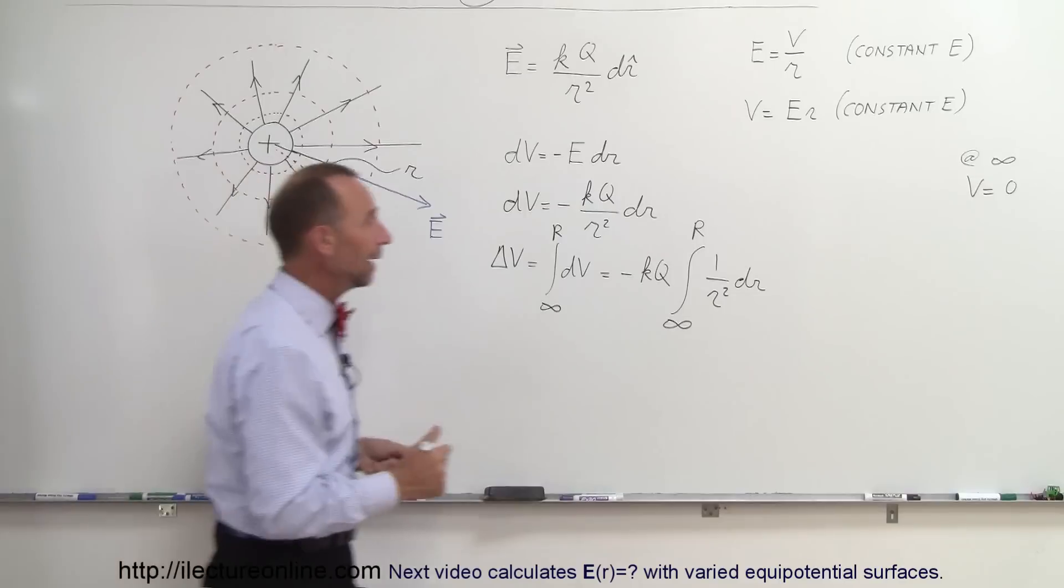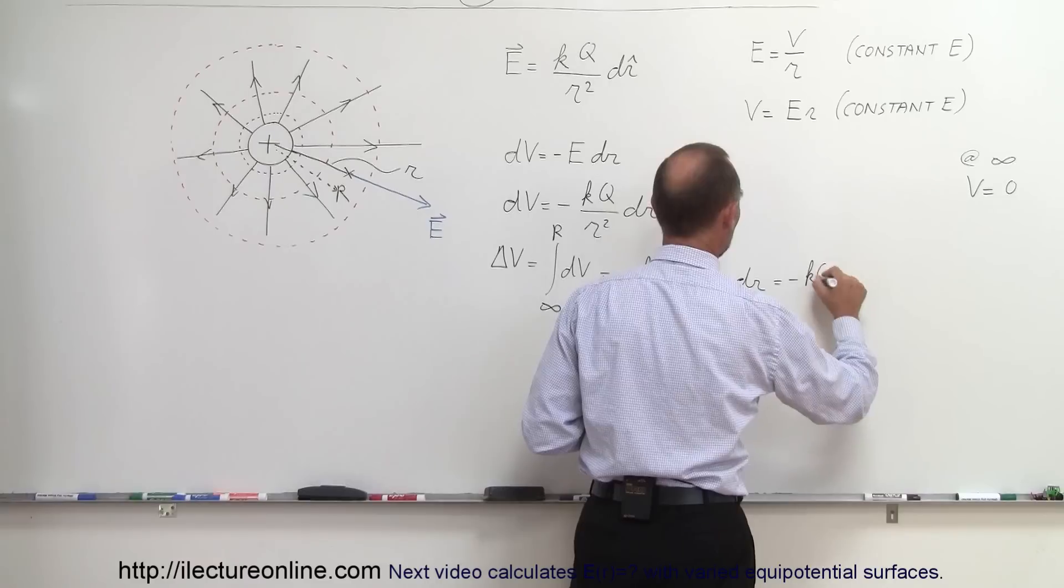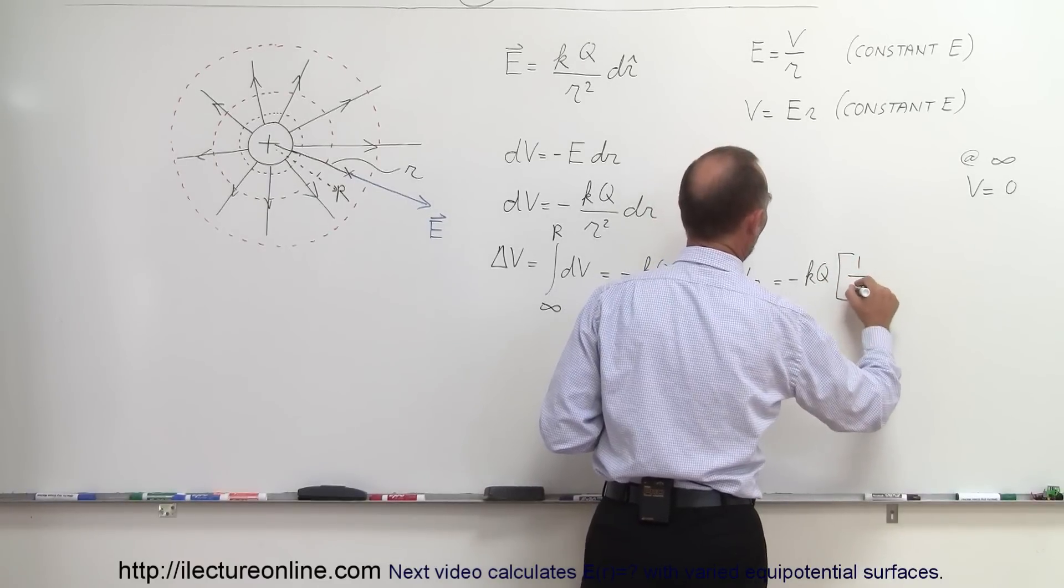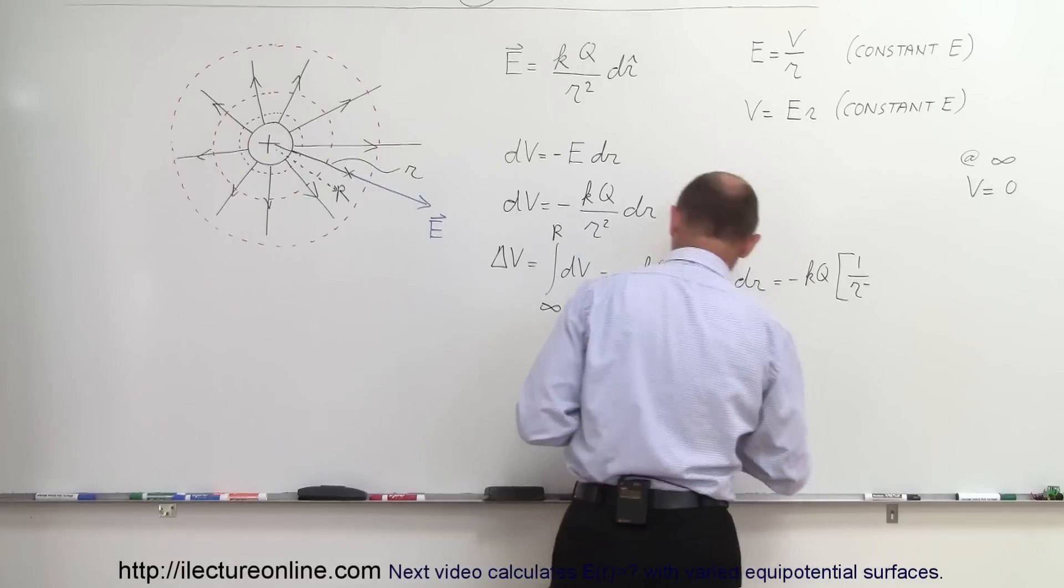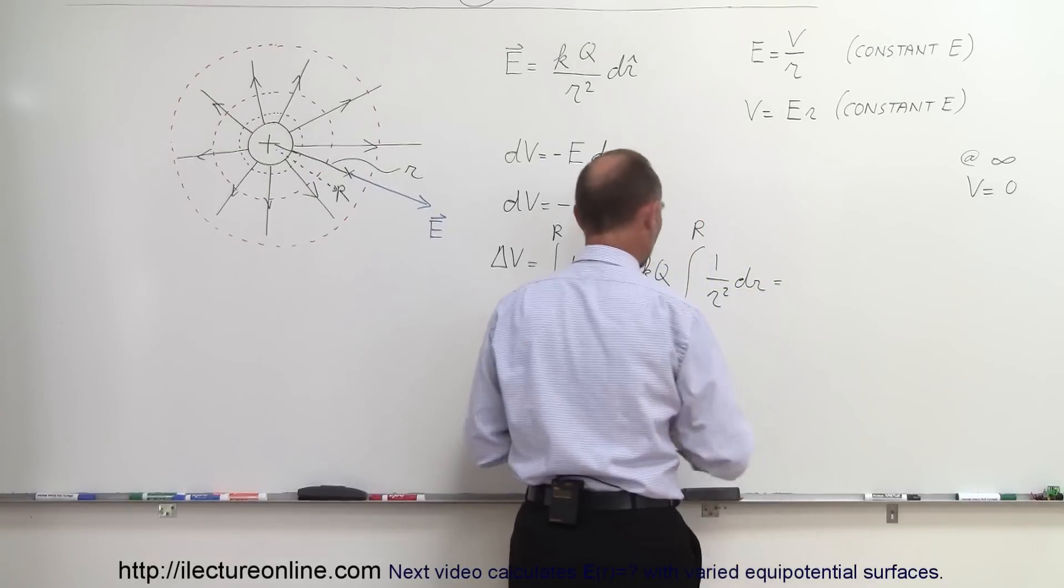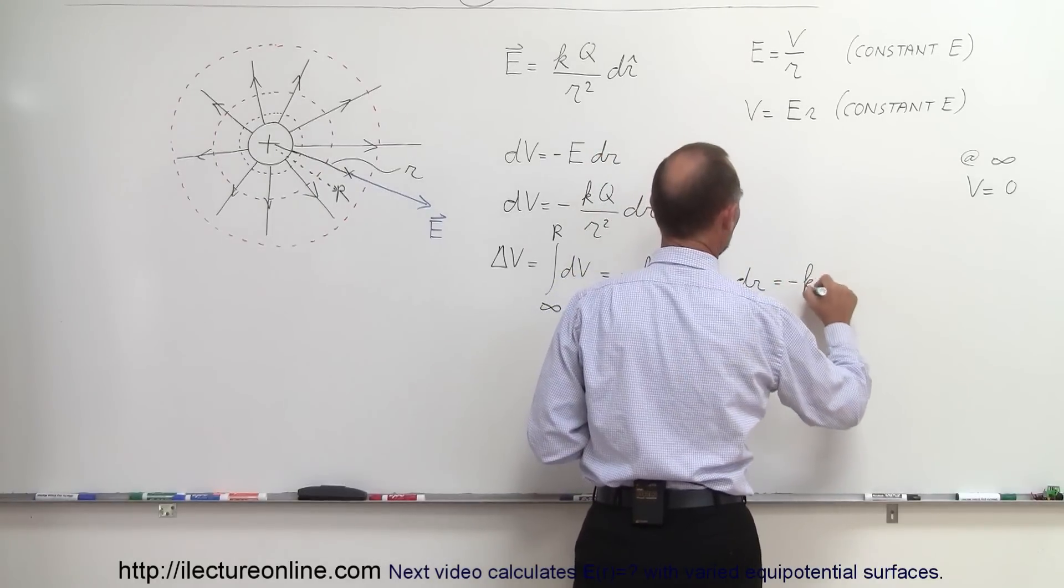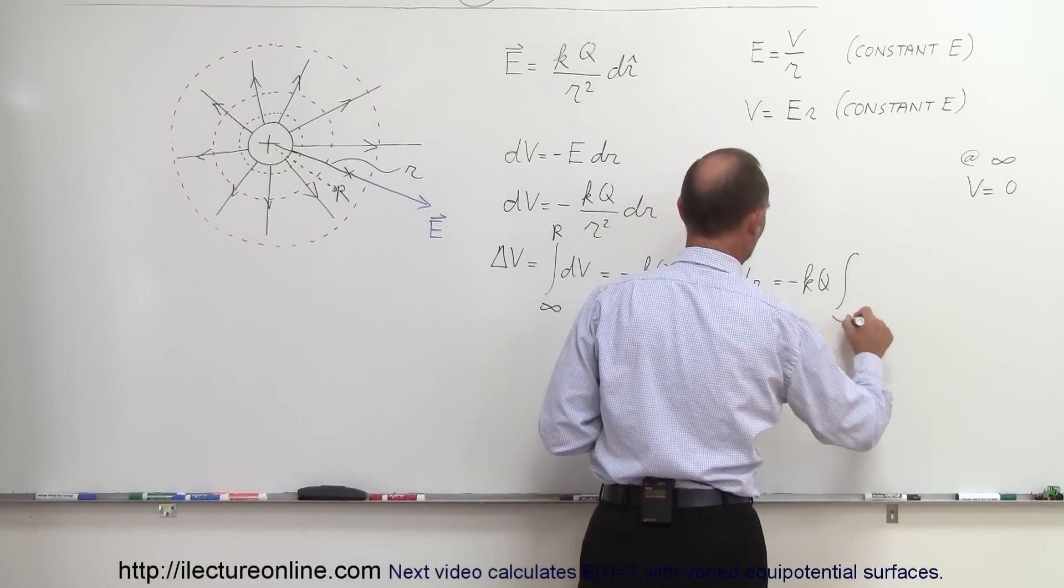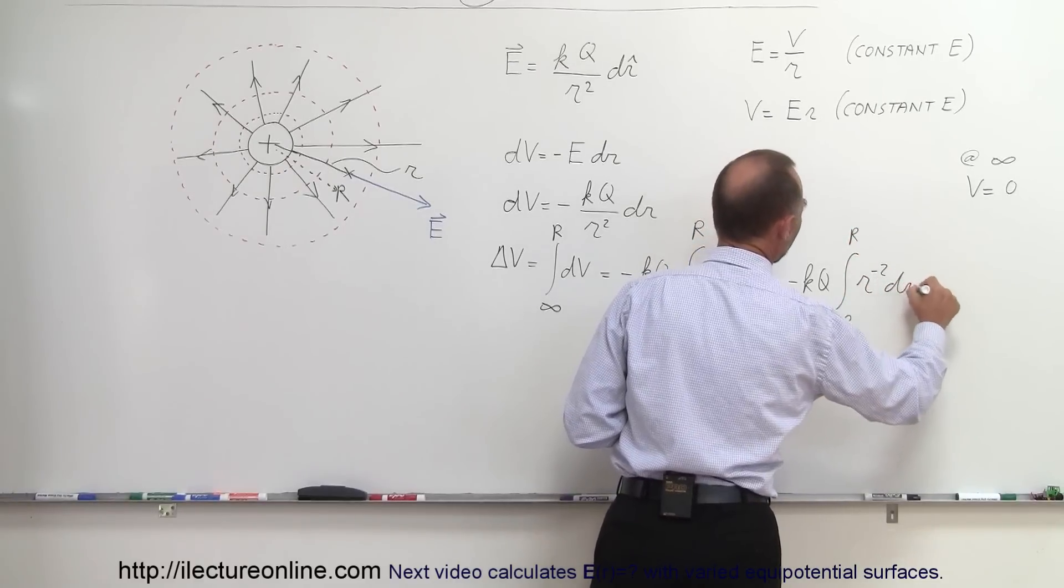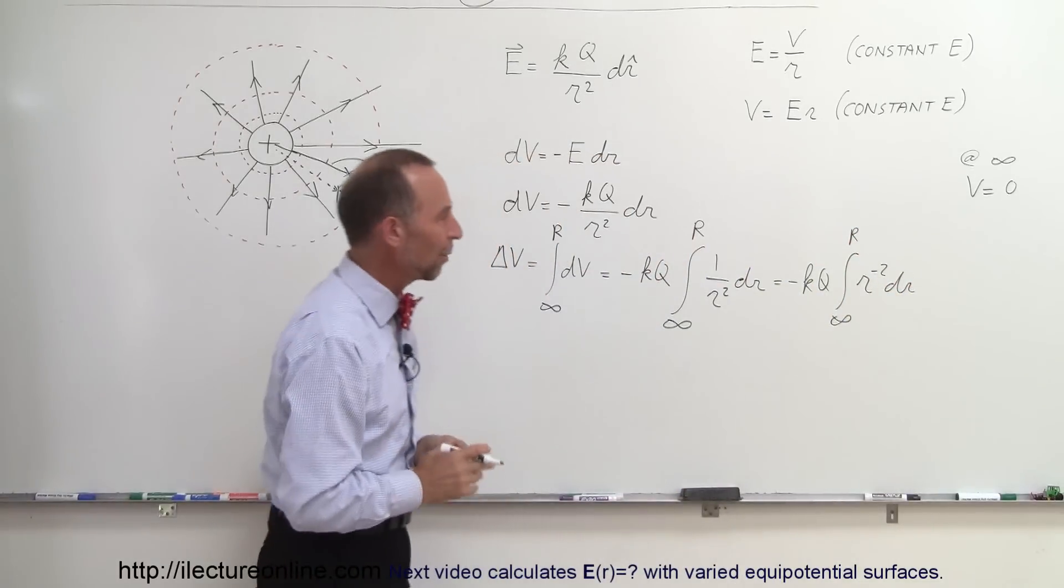If we integrate that we get the following. Let me do one more step in between because it'll make it easier to see. Let me write it like this: minus KQ times the integral from infinity to R of R to the minus two DR. If you write it like that it's just easier to see how we integrate that.